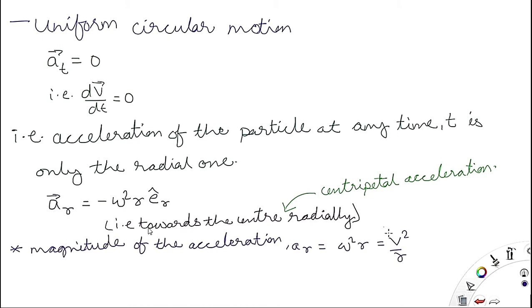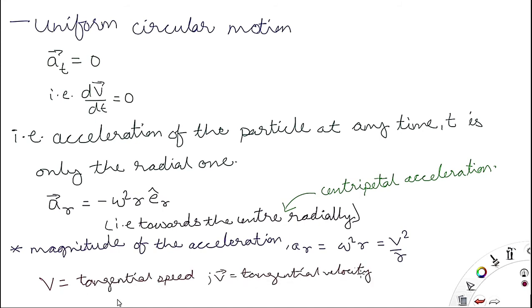The centripetal acceleration acts towards the center, with magnitude ω²r = v²/r, since V = ω·R. In uniform circular motion, the tangential velocity is constant in magnitude but continuously changing in direction.